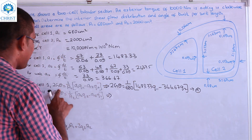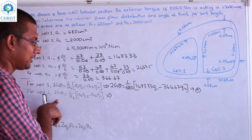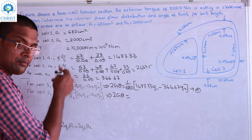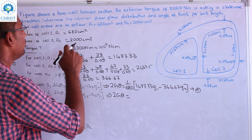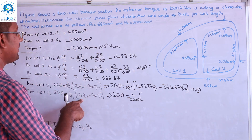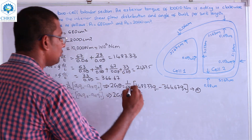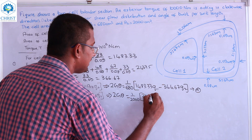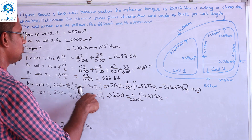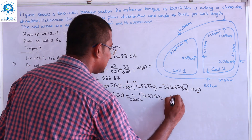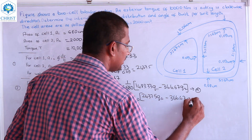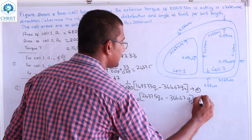Equation B for cell 2: 2G·θ equals (1/2000) into [2437.5·Q2 minus 366.67·Q1]. That is our expression B. We now have equations A and B.